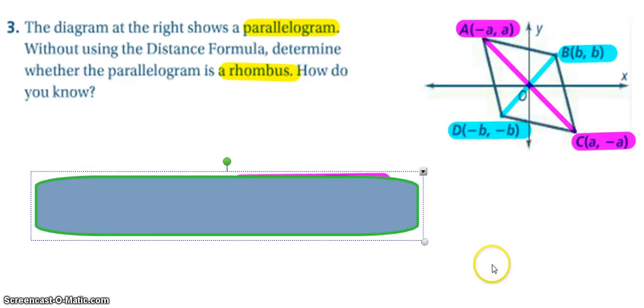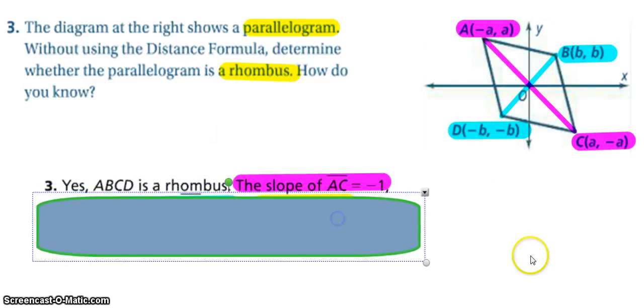So here to determine if something is a rhombus, the easiest thing to do is check the slopes of the diagonals and compare them to each other, because we know if it's a rhombus that slopes of the diagonals will be perpendicular. So we check the slope of AC, which that is from negative A positive A to positive A negative A.